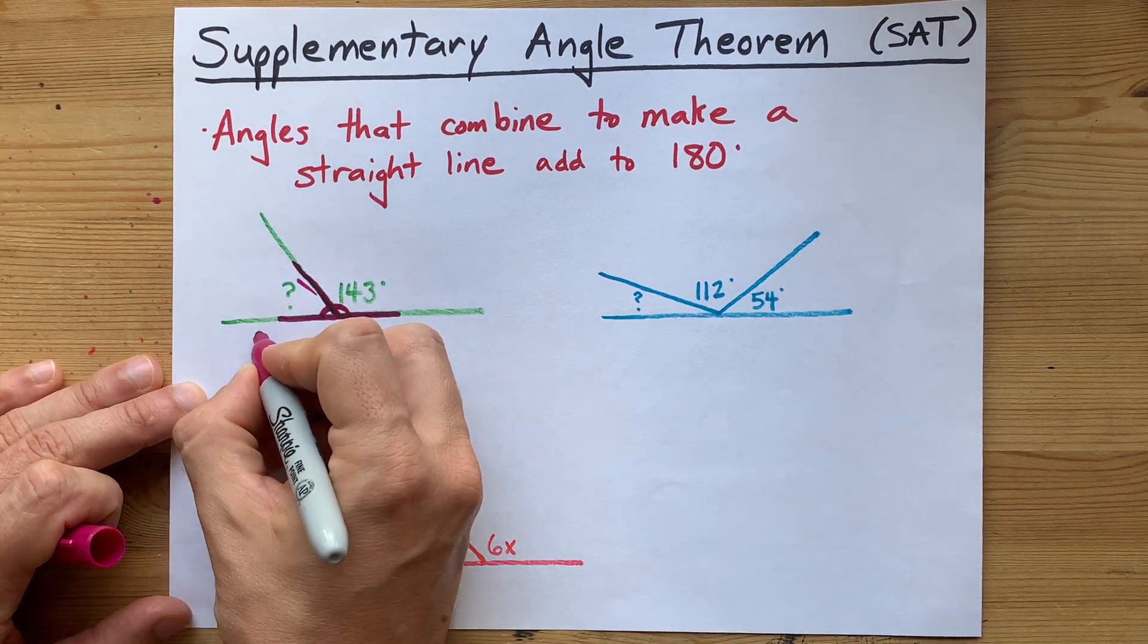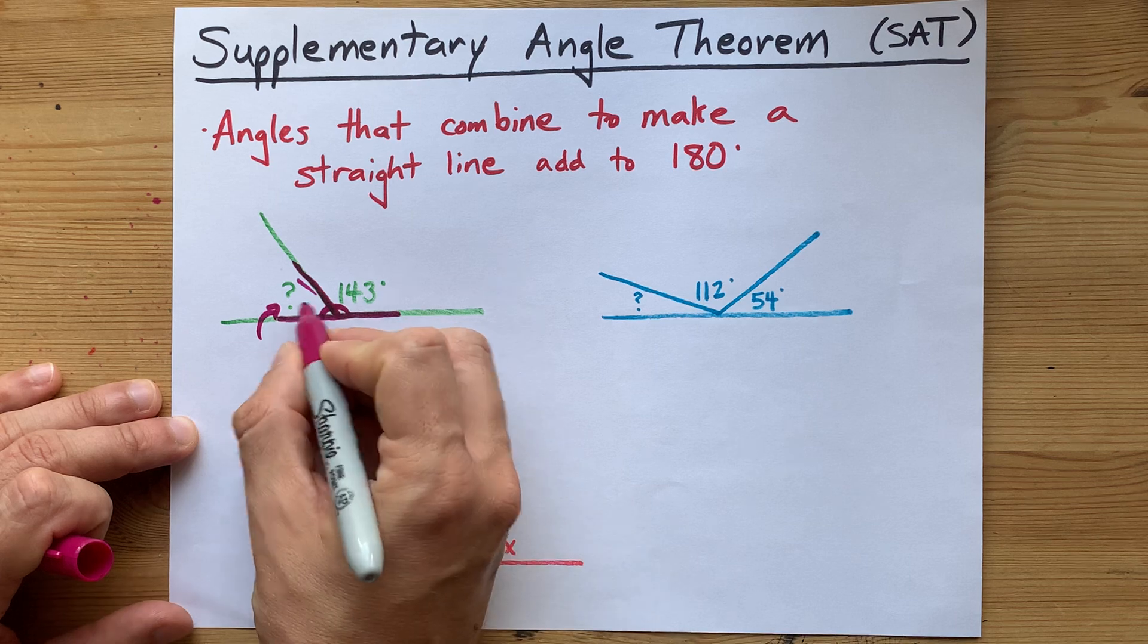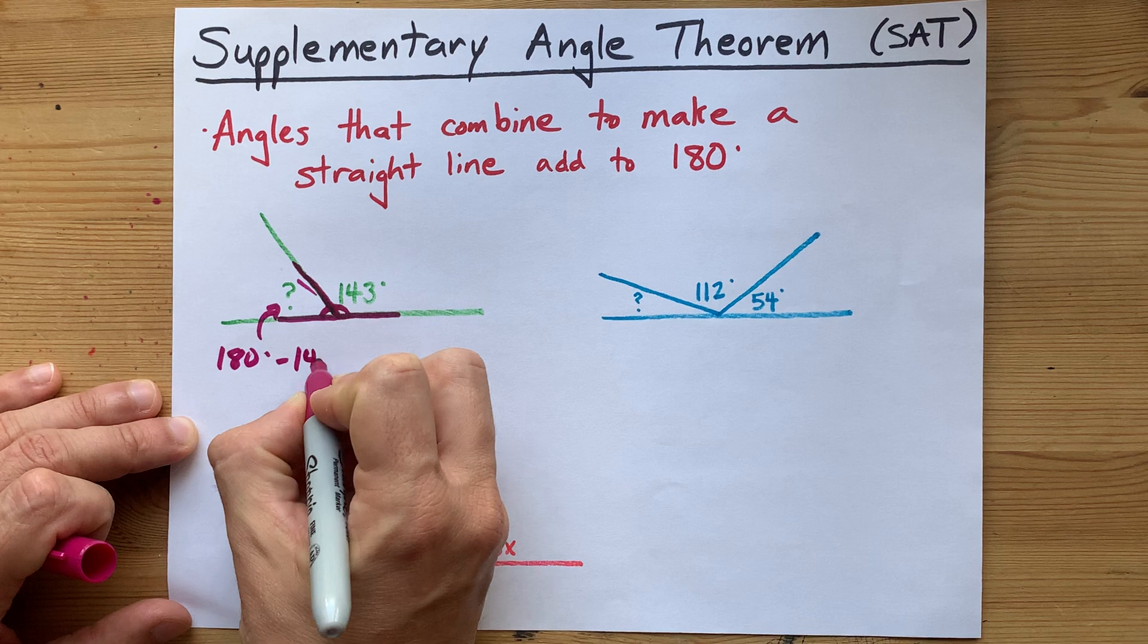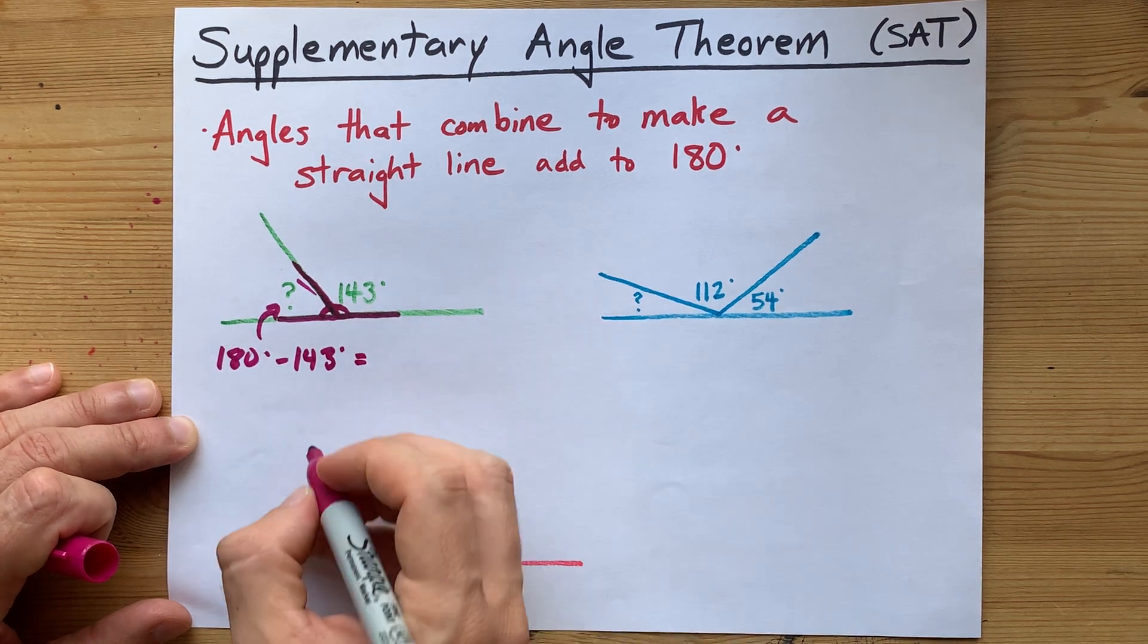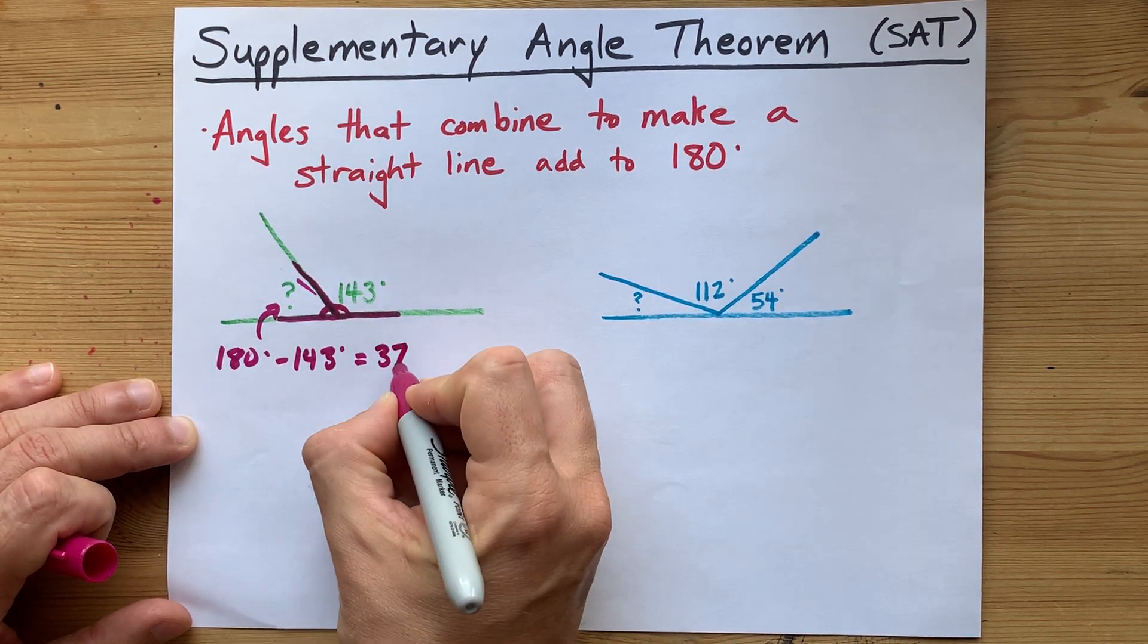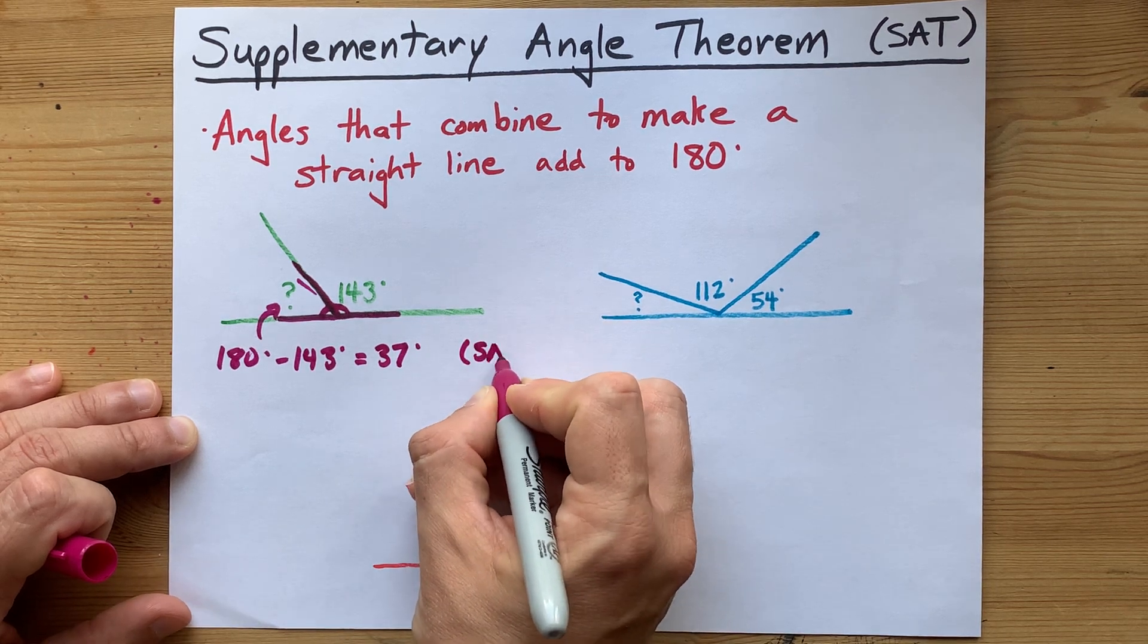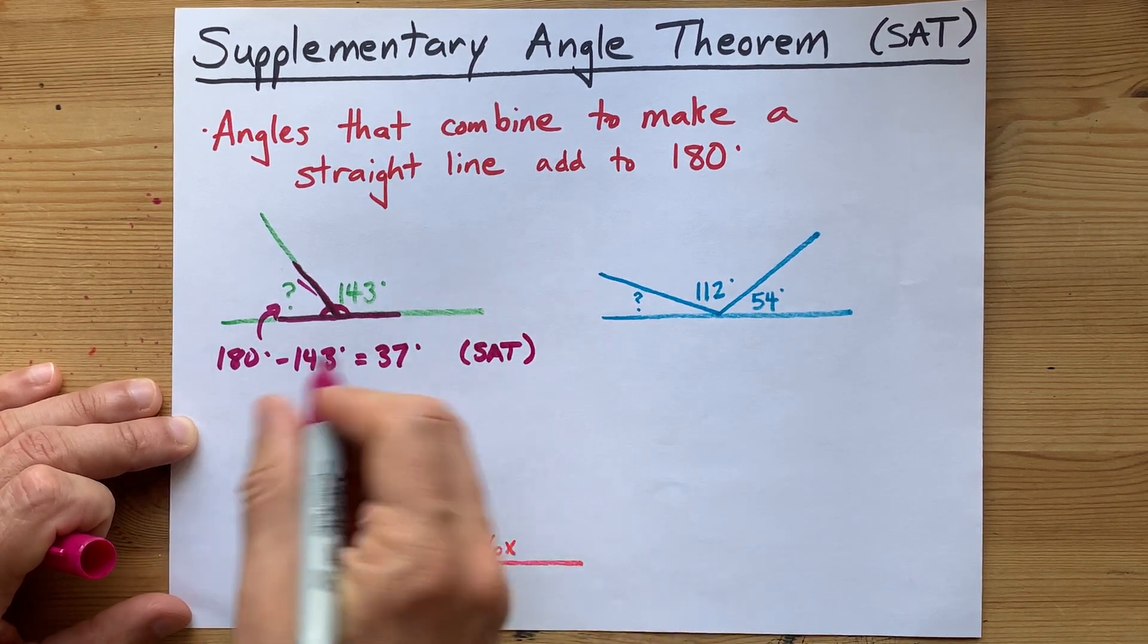So how big is that angle? Well, if these two combine to make 180 degrees, that angle is 180 minus 143. When you do that on your calculator, you get 37 degrees, and your job is to tell the people how you knew to subtract it from 180.